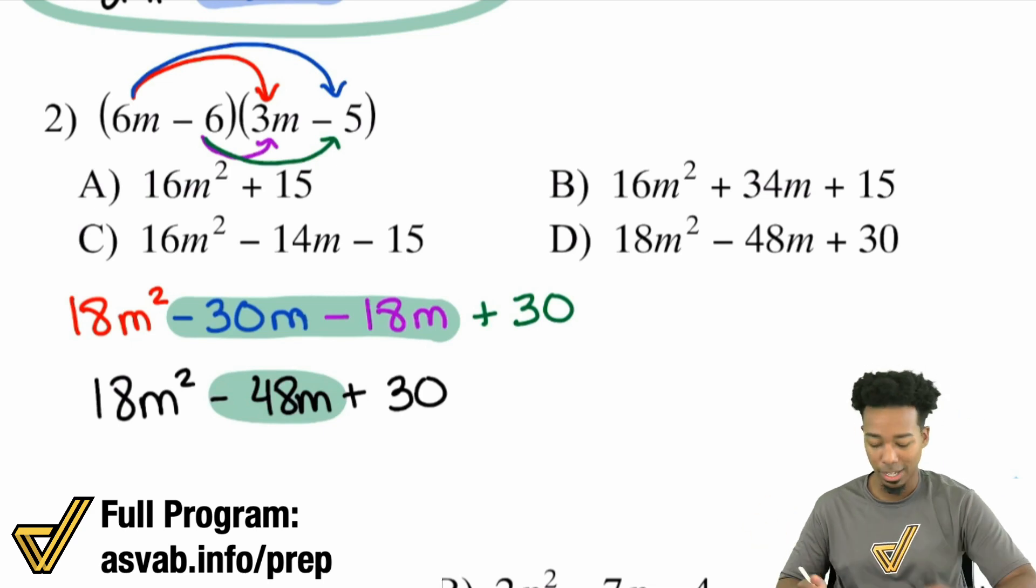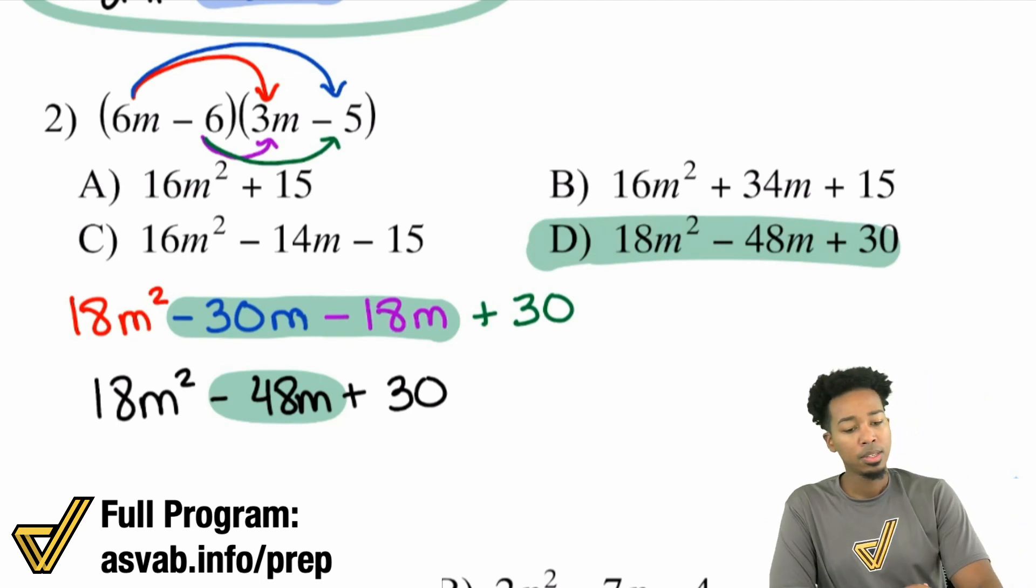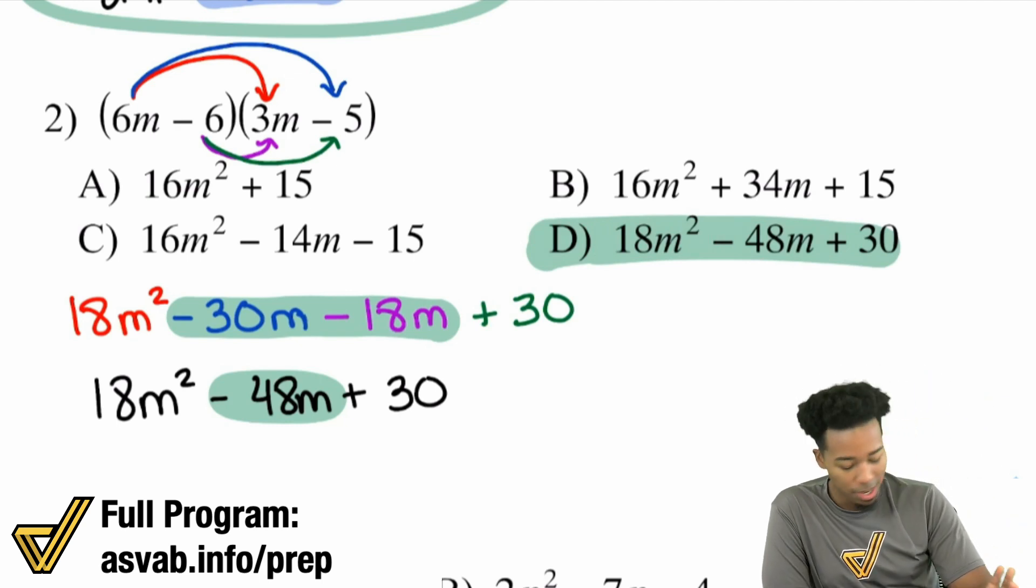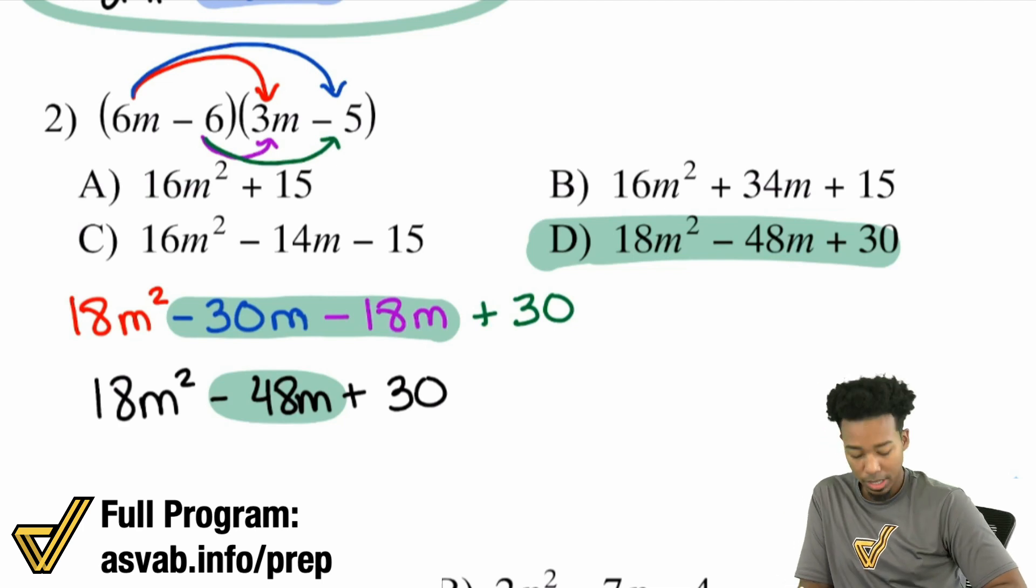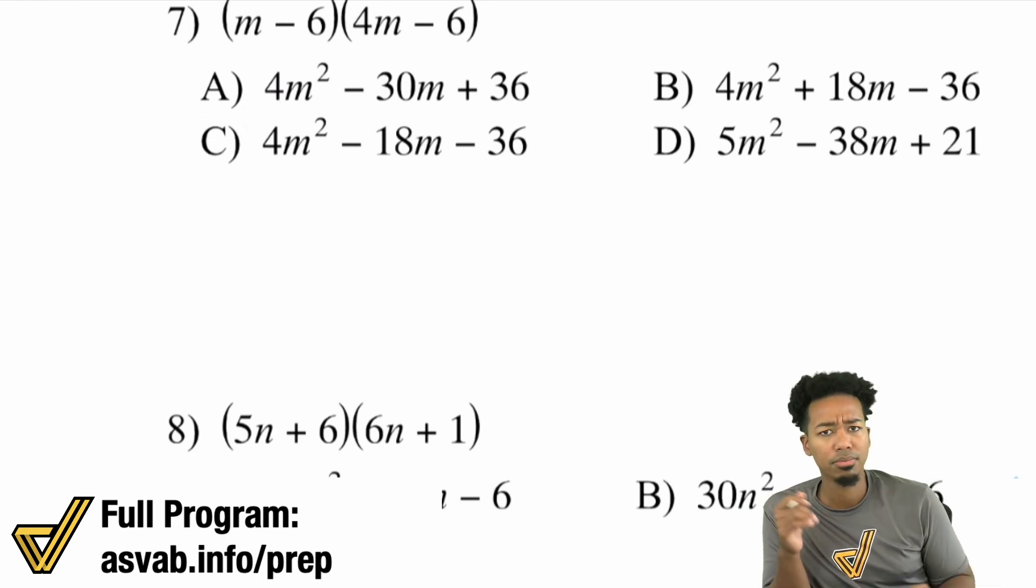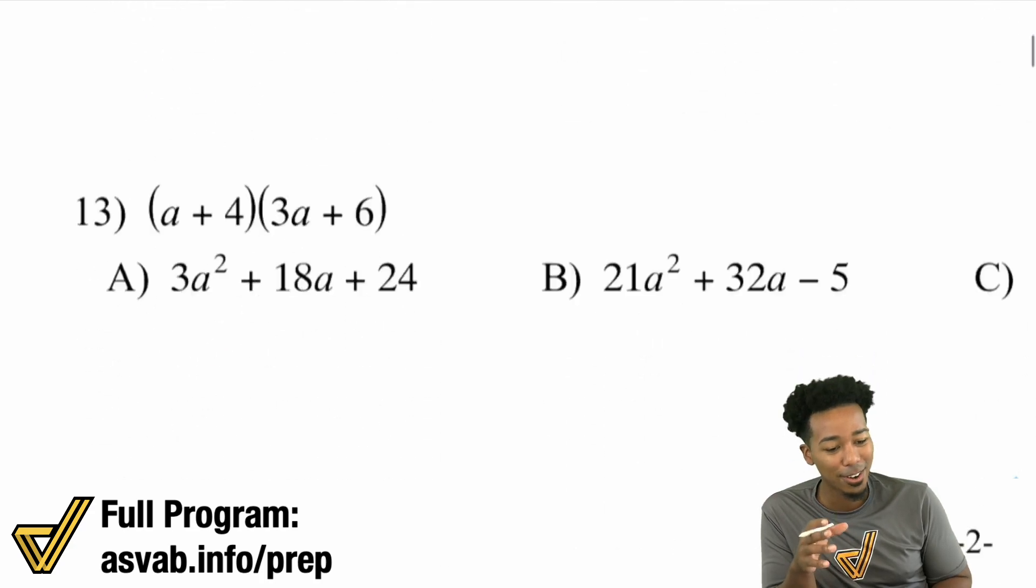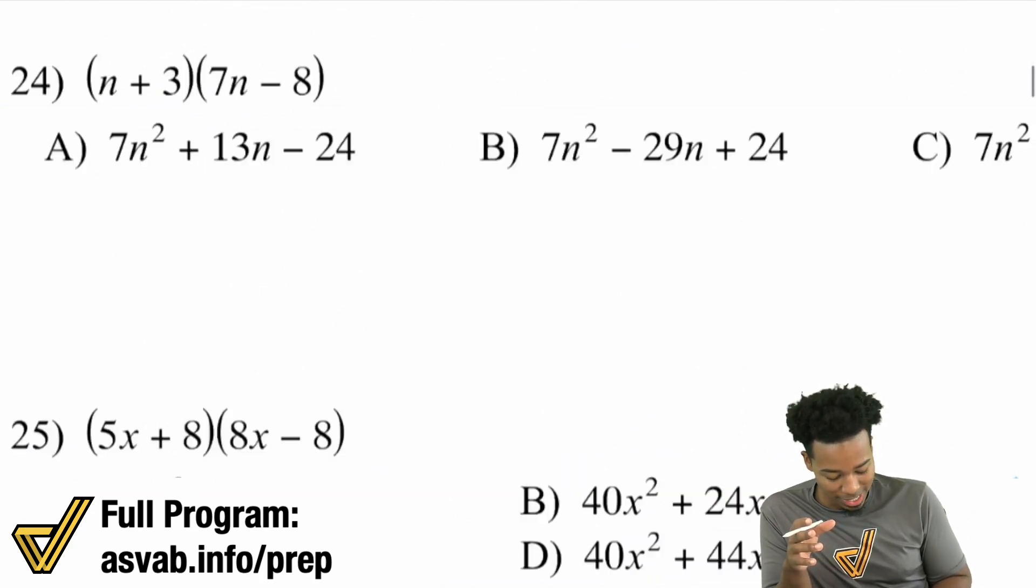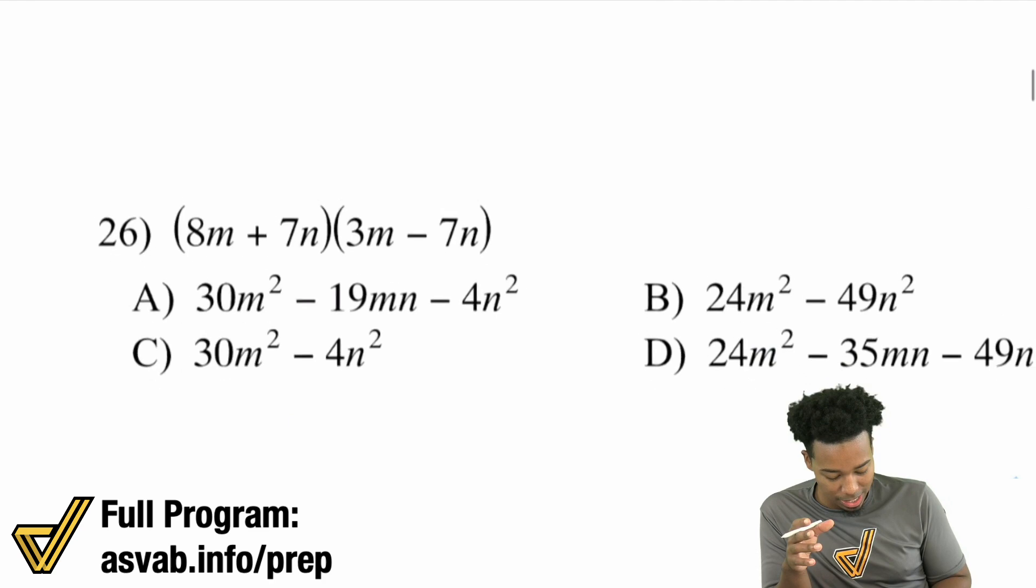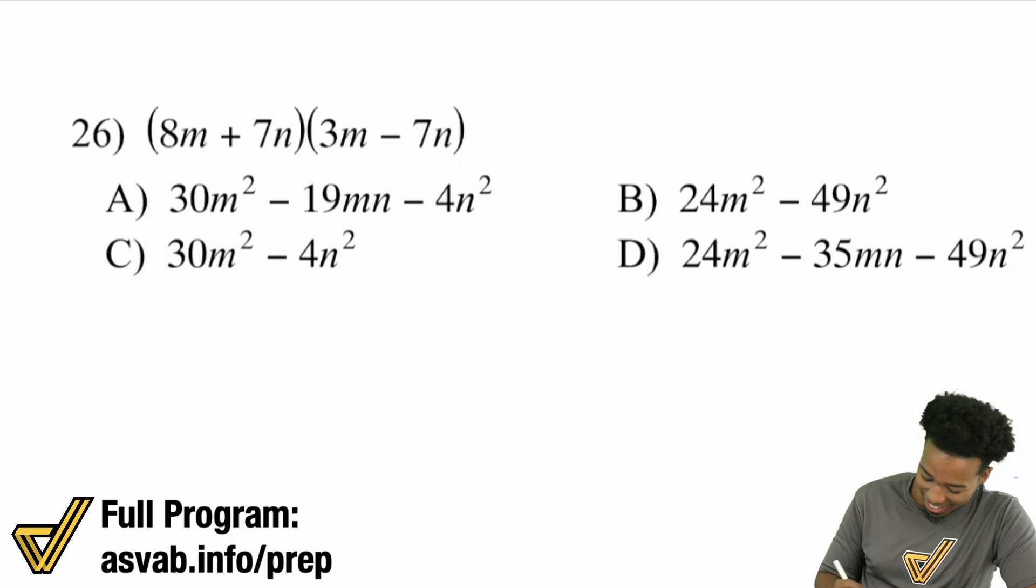And now the last thing that you'll do is combine any like terms that we have. And notice right over here, we have ourselves some like terms. Negative 30M minus 18M. Same variable, same exponent. We can combine those. So we'll just go ahead and write our final answer as 18M squared. This right over here becomes negative 48M plus 30. And we're done. So my math particle, again, it doesn't seem that terrible, right? Doesn't seem that terrible at all. So I'm going to go ahead and take you through an example where things are looking a little funky.